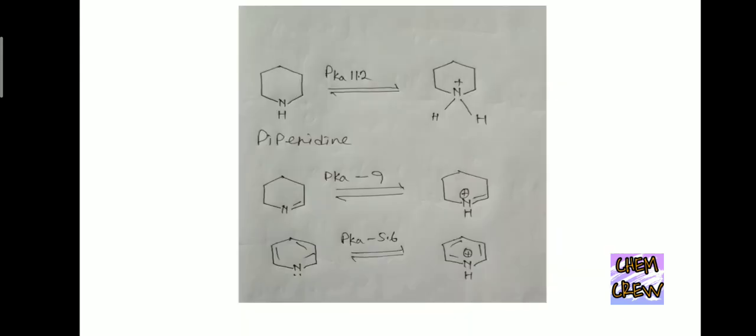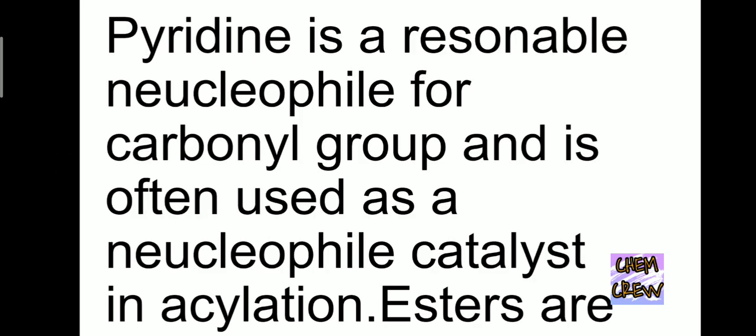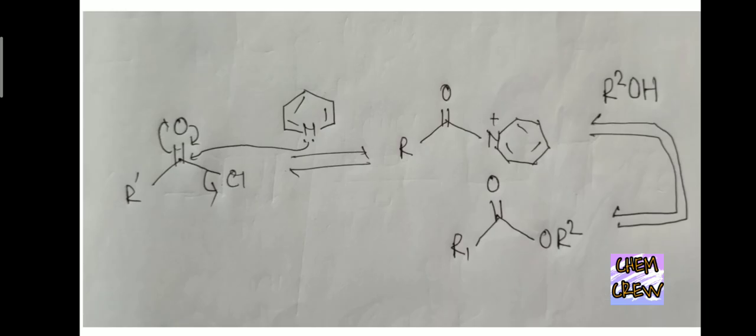This shows the reaction. Pyridine is a reasonable nucleophile for a carbonyl group and is often used as a nucleophilic catalyst in acylations. This is the reaction of pyridine with RCOCl. Here pyridine reacts at the carbon of the carbonyl group and chlorine is removed.